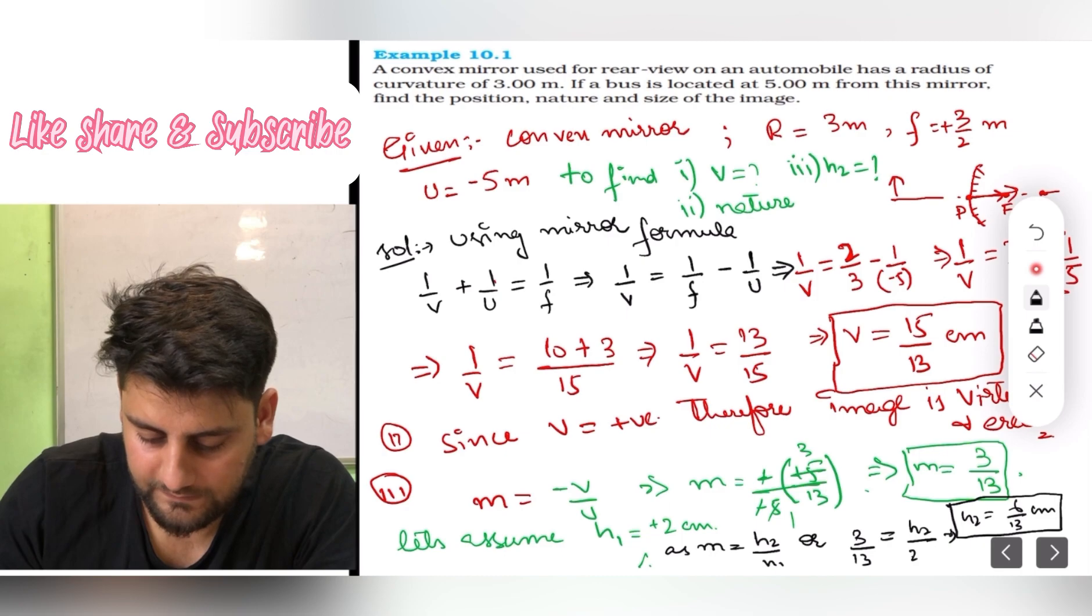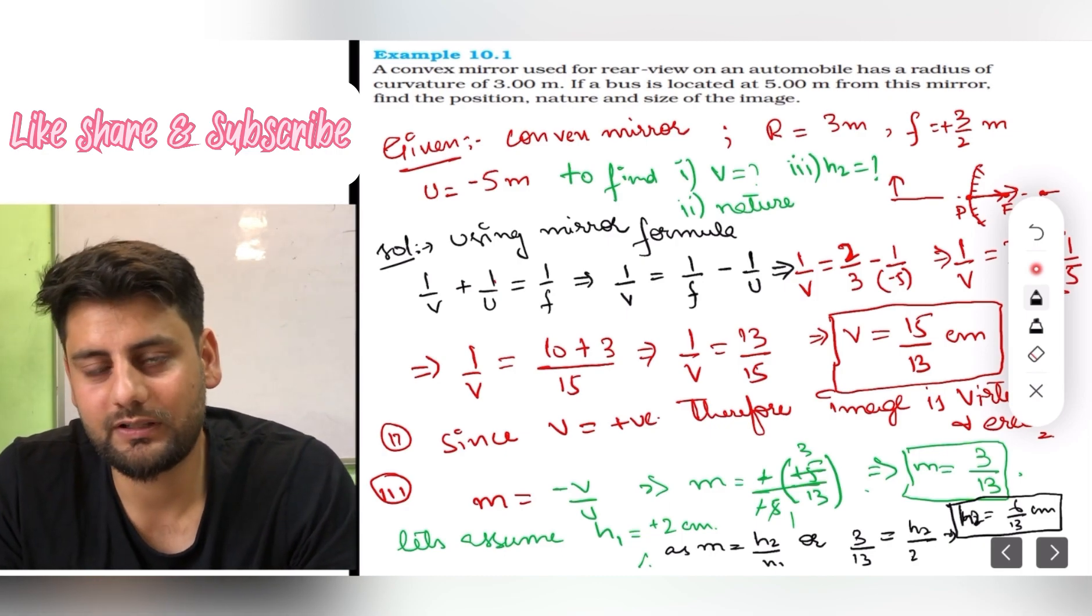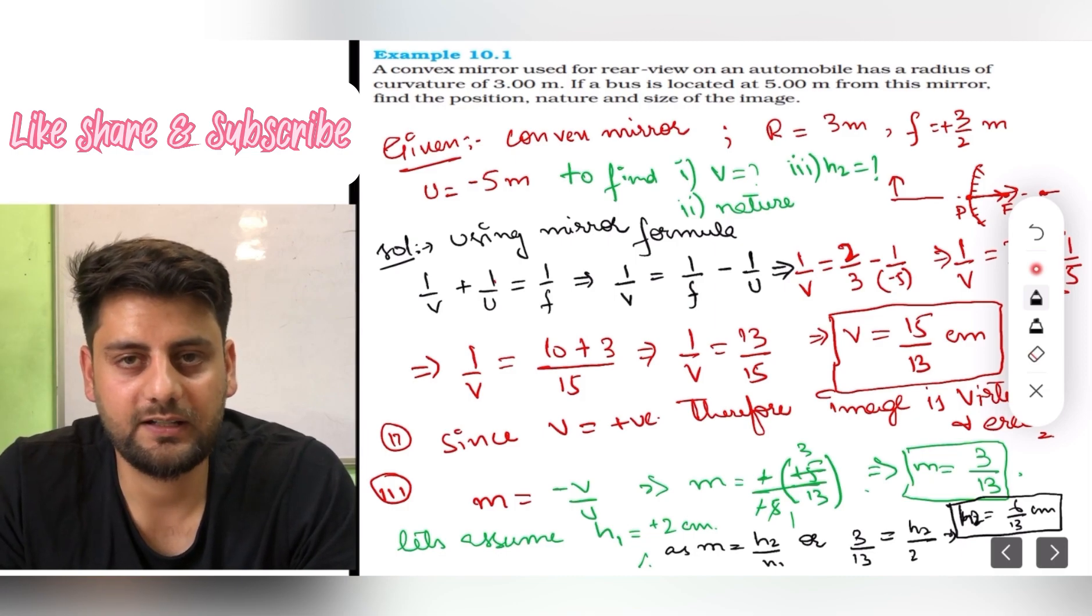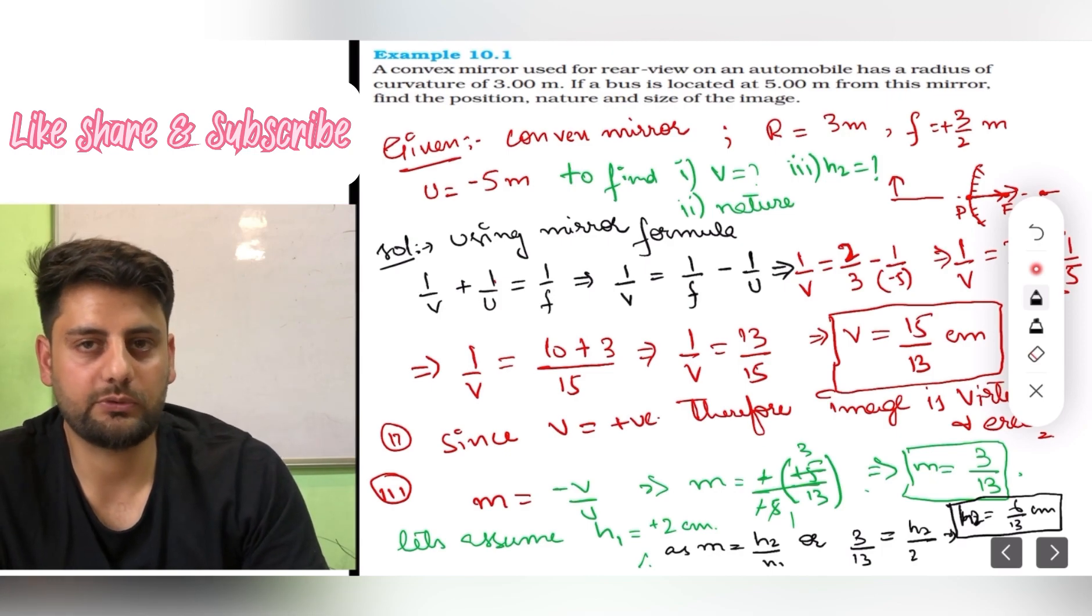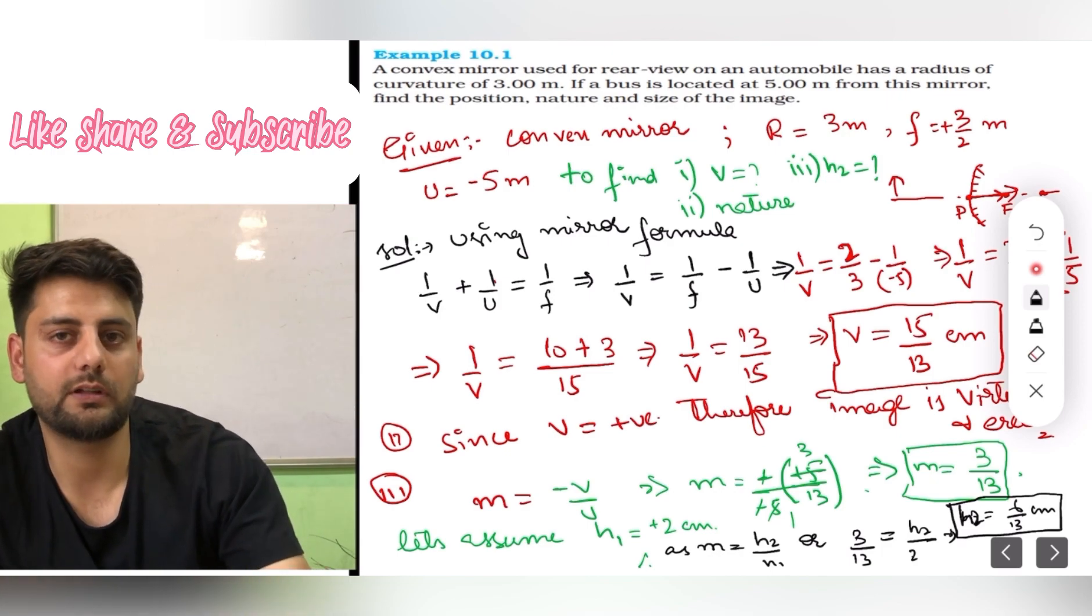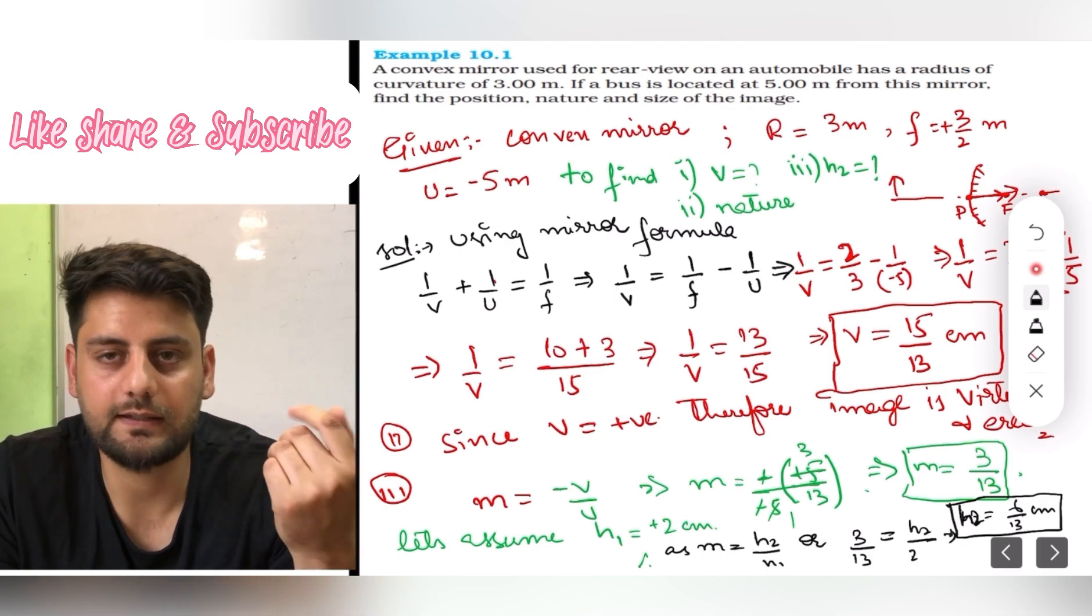So you can say 2 threes are 6. So h2 is nothing but 6 by 13 centimeter. You had assumed here, what will be the value of h2? I hope this is clear. Very easy. Otherwise you can stop at magnification. But everybody will stop there. So you can go one step further by assuming h1.